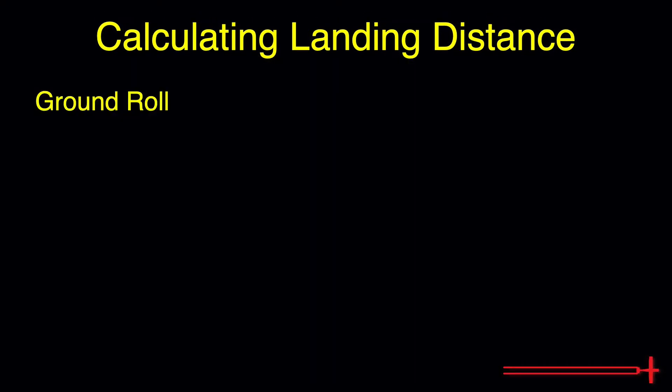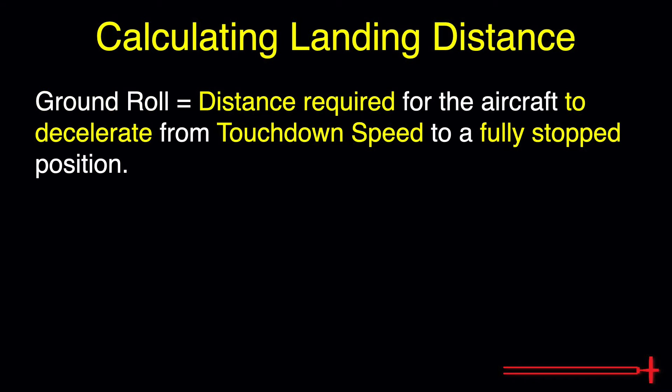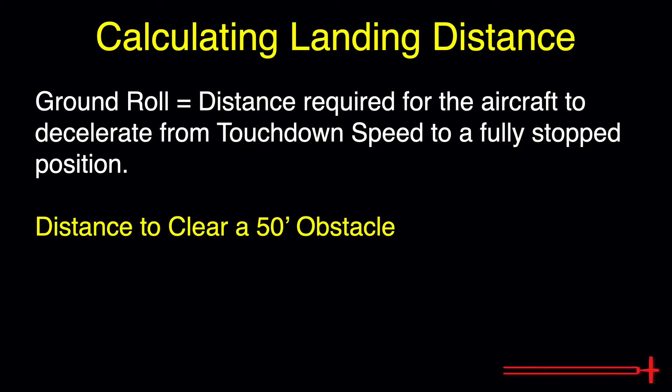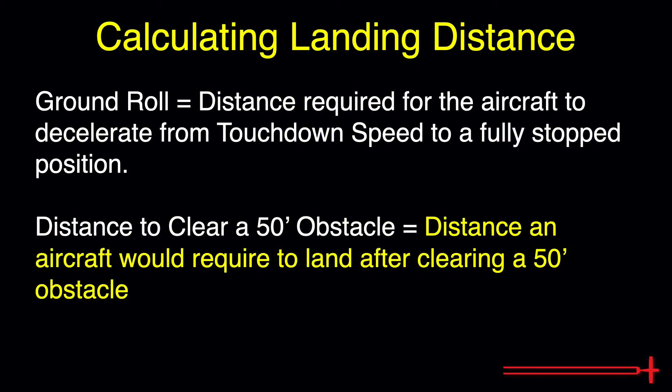One gives us ground roll distance, which refers to the distance required for an aircraft to decelerate from touchdown speed to the fully stopped position. The other gives us distance to clear a 50-foot obstacle — the distance an aircraft would require to land after clearing a 50-foot obstacle at the approach end of a runway, plus the distance required to decelerate to the fully stopped position. We should pay especially close attention to both figures when operating to relatively short fields or those with obstacles at the approach end.